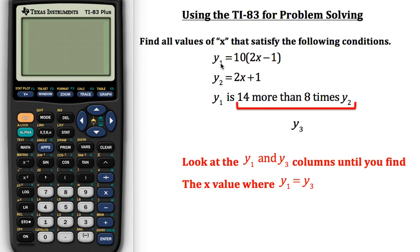They give you y sub 1 is equal to 10 times the quantity of 2x minus 1, y sub 2 is equal to 2x plus 1, and then in the third thing here they've given you a little clue. They've told you that y sub 1 is 14 more than 8 times y sub 2.